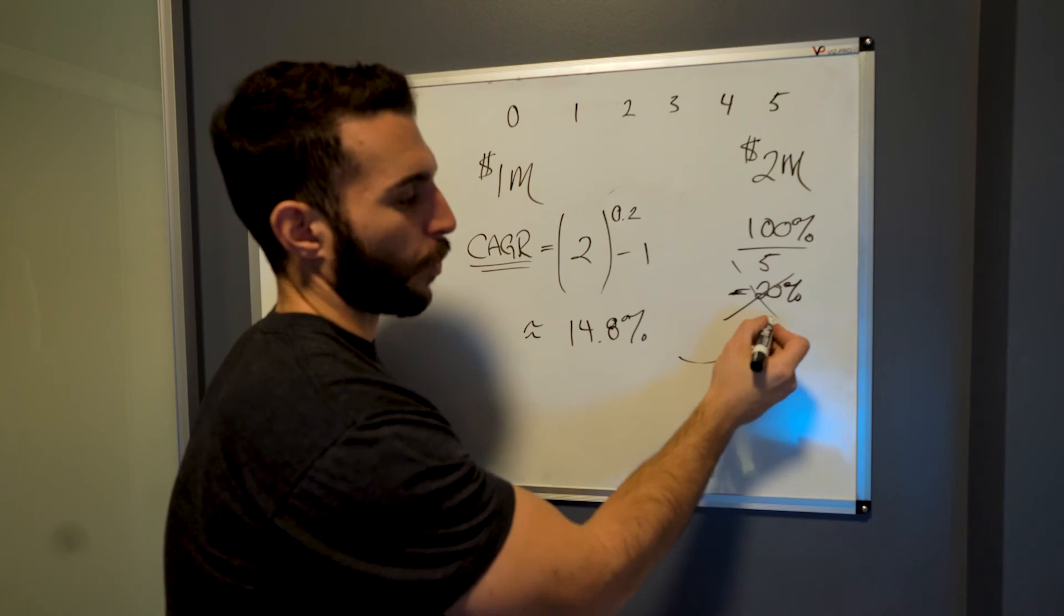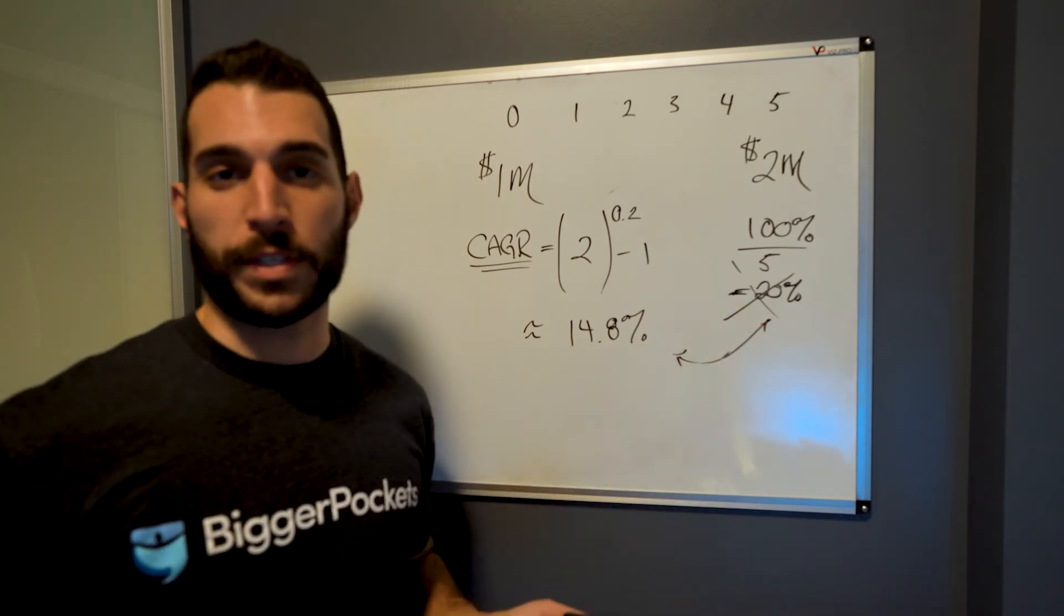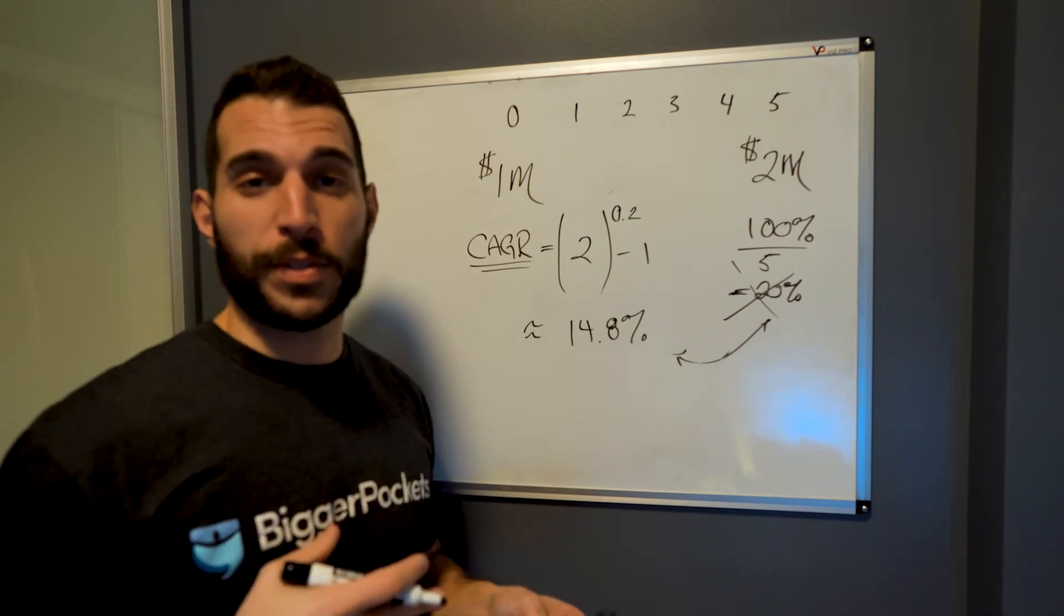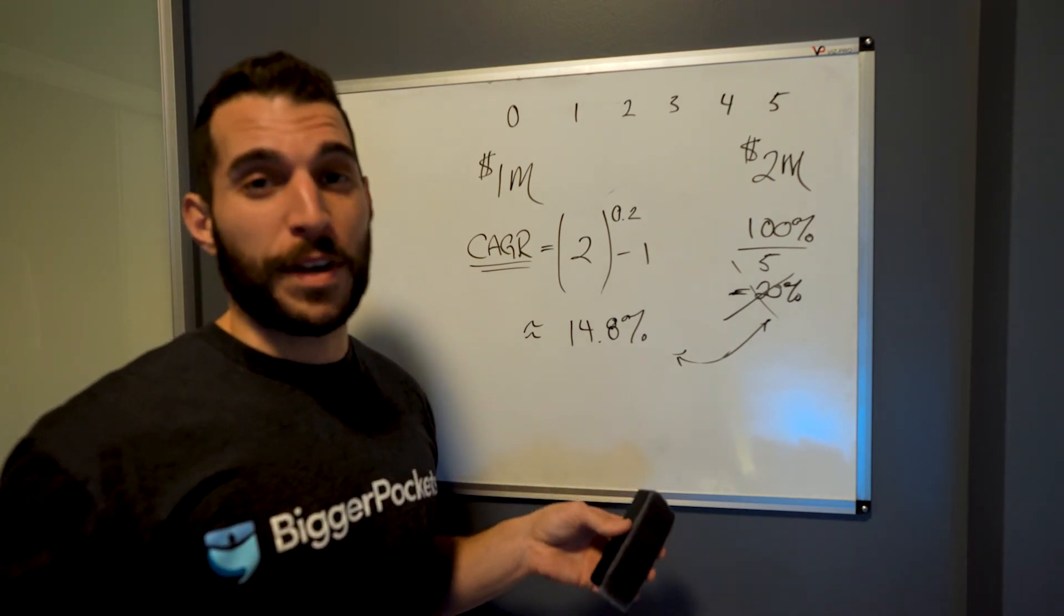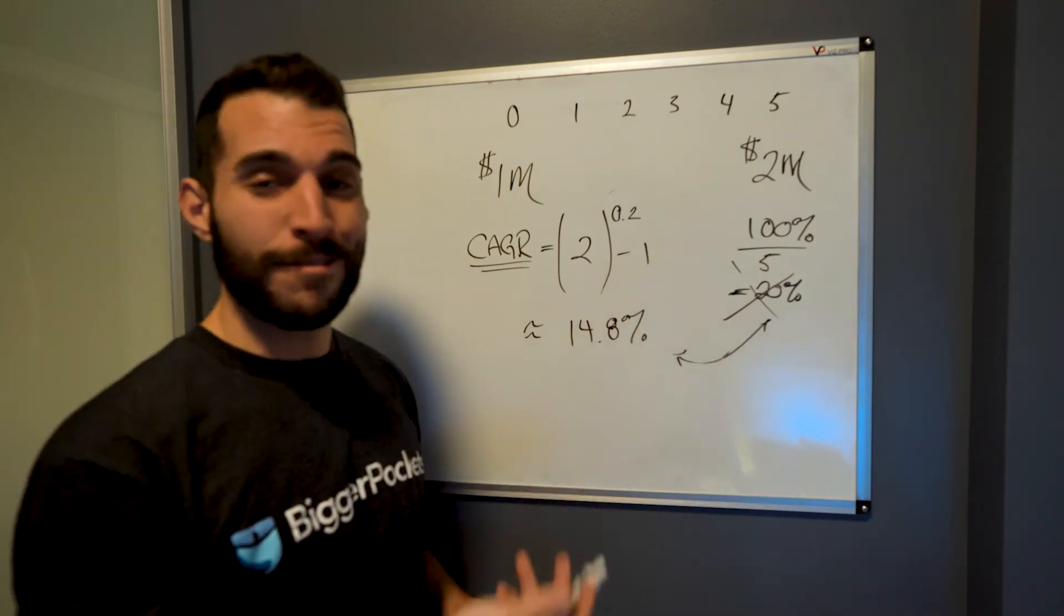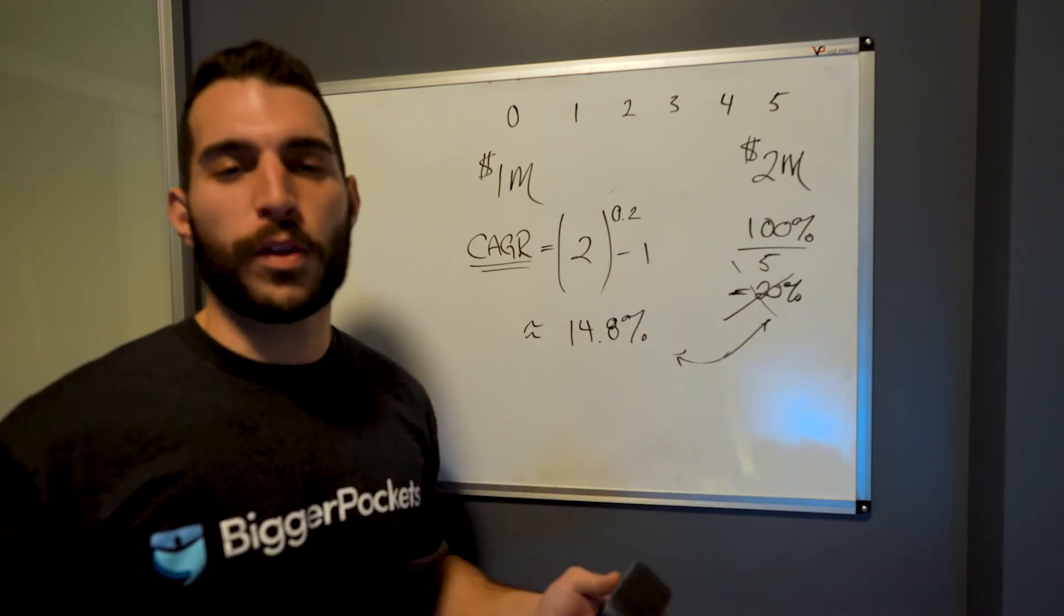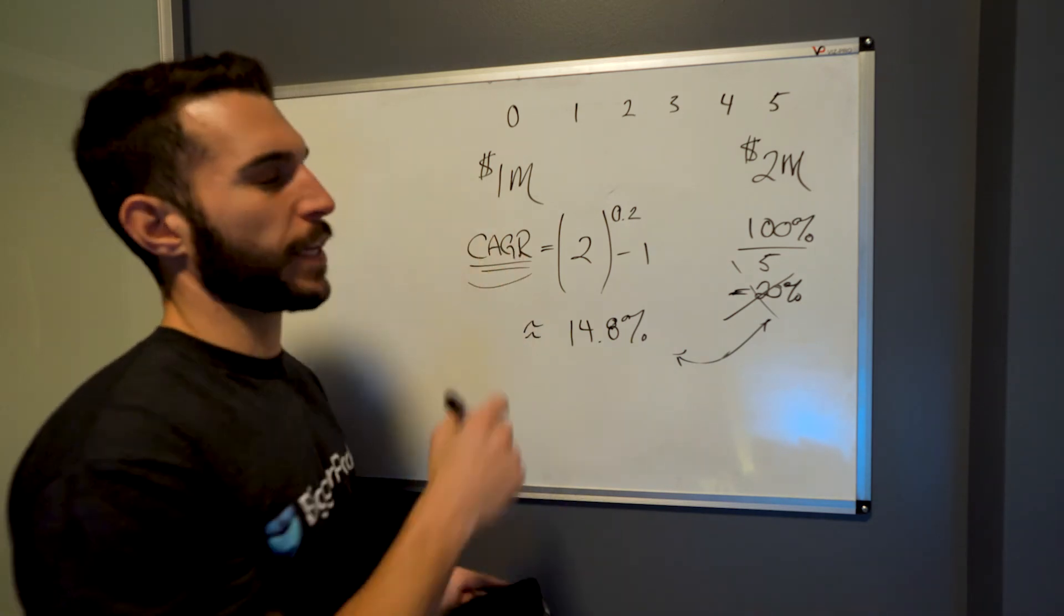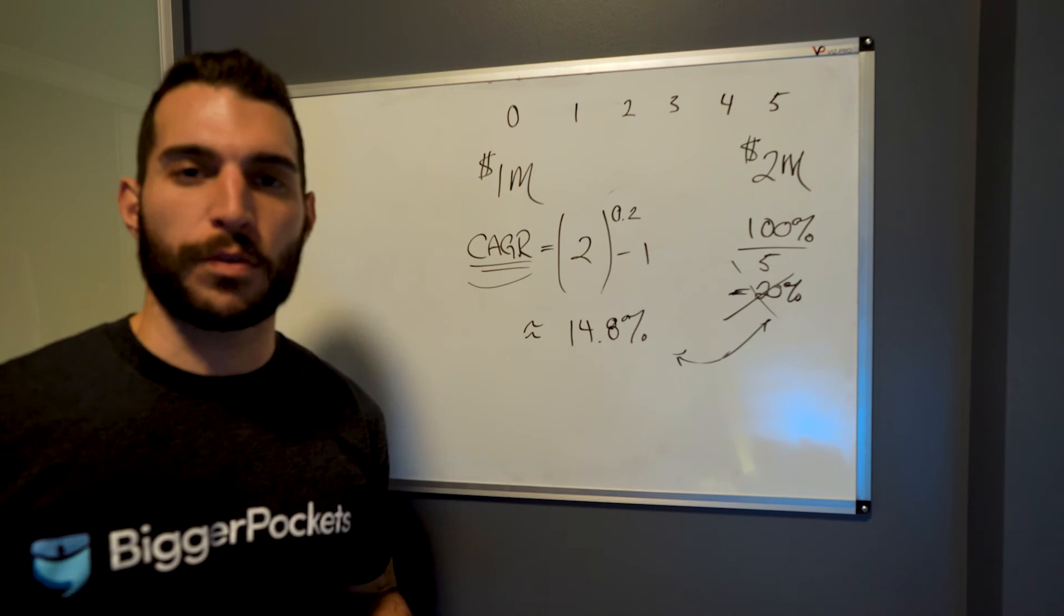Big difference from 20% and 14.8%. Quite frankly, if somebody told me I was getting an investment and I thought I was getting 20% and it turned out to be 14.8%, I'd be pretty pissed off. I mean, it's still an amazing return. But if that's what your anchor is and this is what you get, not so happy about that. So what did we learn here? In order to annualize returns properly, you have to use the CAGR formula or the compound annual growth rate formula.